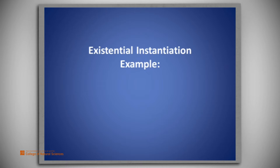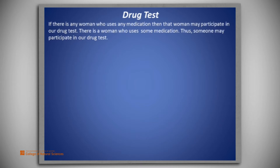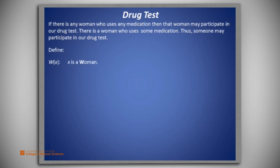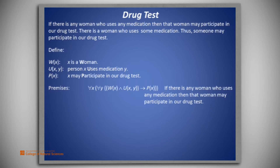This is an example demonstrating the existential instantiation rule — we call it 'drug test.' The story is: if there is any woman who uses any medication, then that woman may participate in our drug test. There is a woman who uses some medication; thus someone may participate in our drug test. Let's begin by defining W(x) to be 'x is a woman,' U(x,y) to mean 'person x uses medication y,' and P(x) to mean 'x may participate in our drug test.'